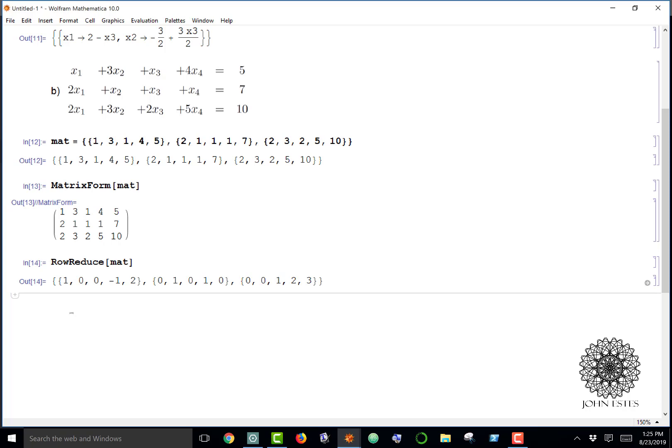Since Gauss-Jordan elimination gave us a dependent system, meaning we have an infinite number of variables, from there it's not as obvious what my solutions are going to be. I could do this: I could do another solve, and I'm gonna have x1 minus x4 equals equals 2.